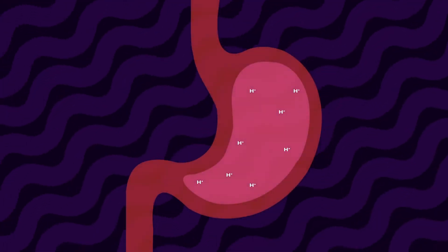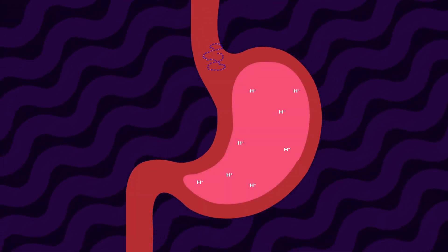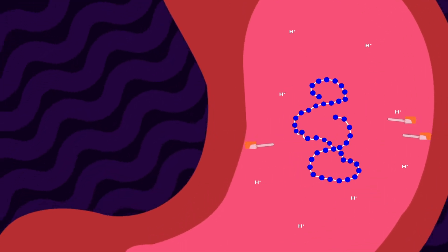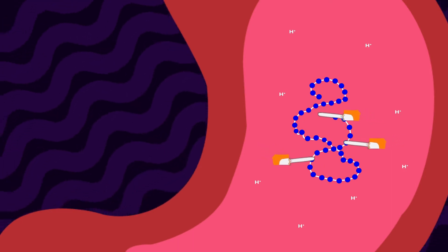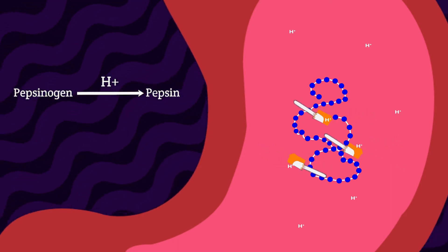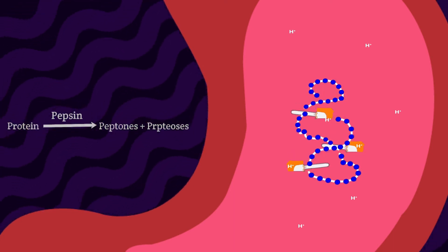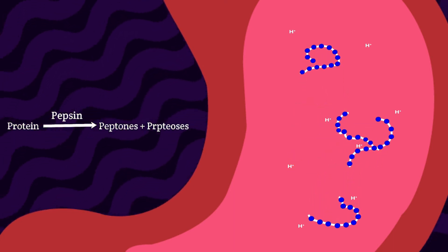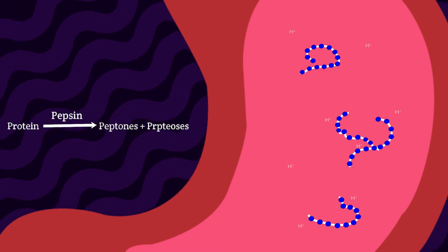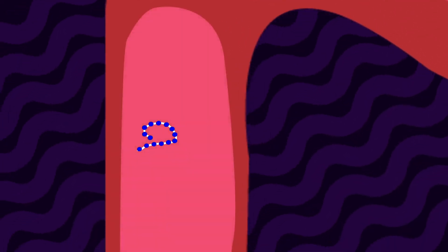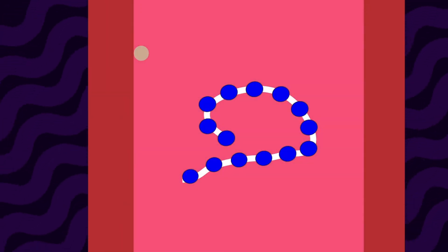Protein digestion begins in the stomach, where the peptic or chief cells secrete pepsinogen, which is converted by the acidic environment of the stomach into the active enzyme pepsin. Pepsin then breaks down the long protein chain into smaller peptides known as proteoses or peptones.